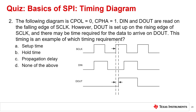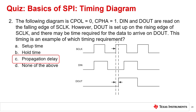Question 2: The following diagram uses CPOL=0 and CPHA=1. DIN and DOUT are read on the falling edge of S-Clock. However, DOUT is set up on the rising edge of S-Clock and there may be time required for the data to arrive on DOUT. This timing is an example of which timing requirement? The correct answer is C, propagation delay.